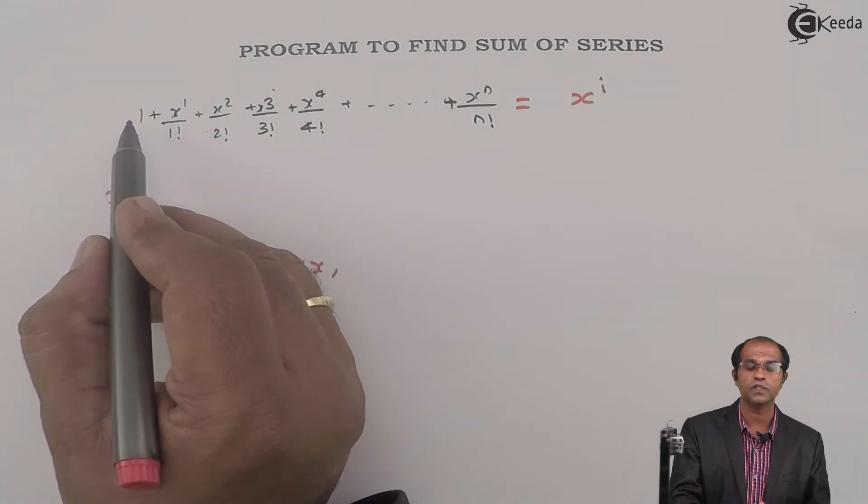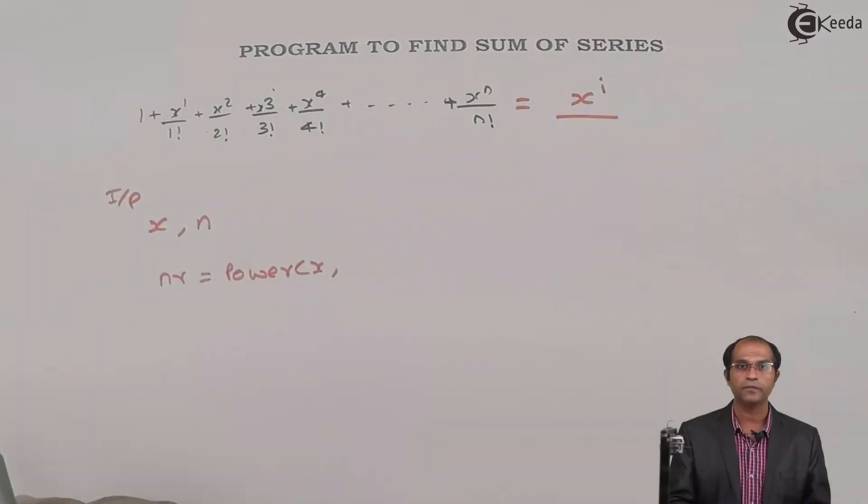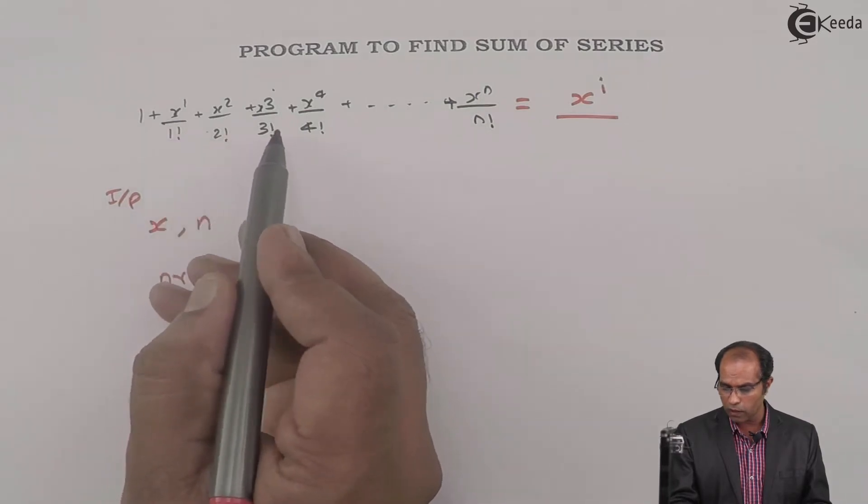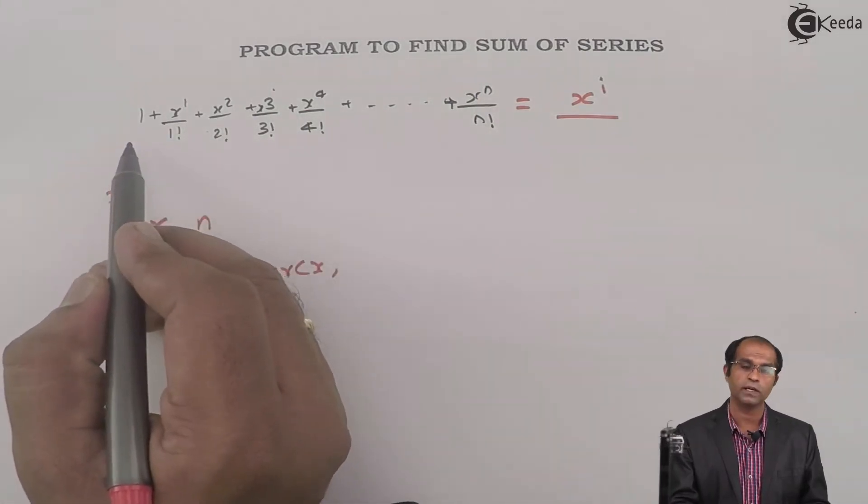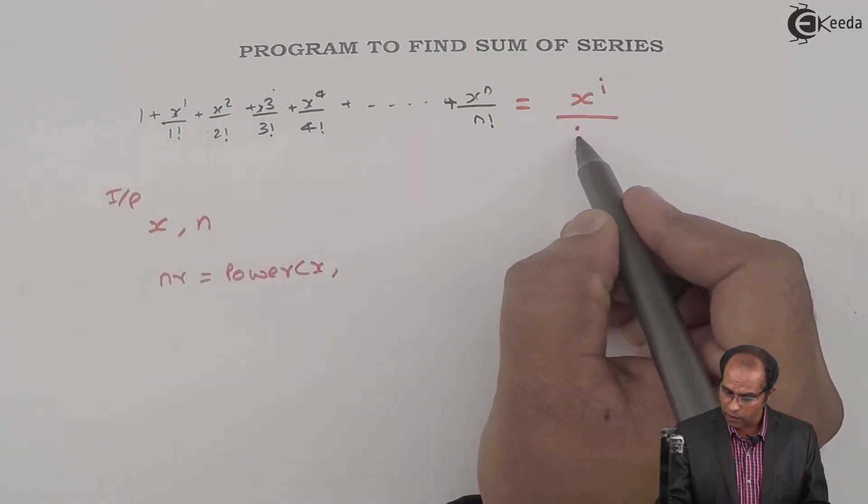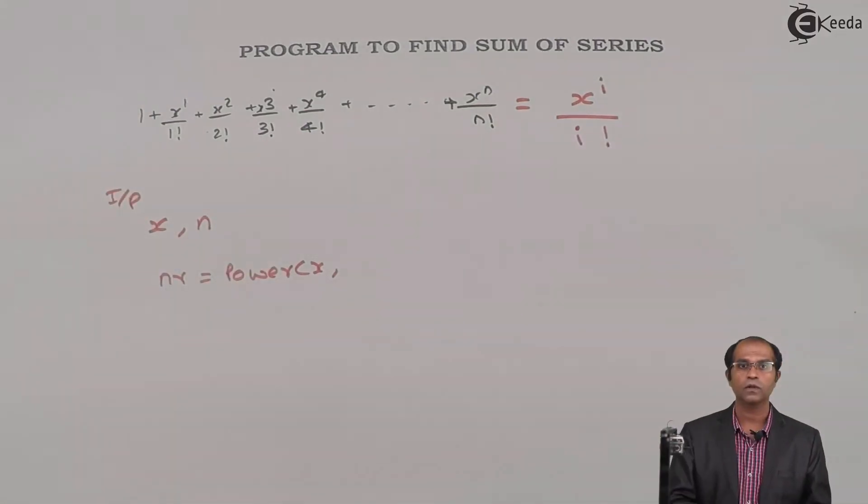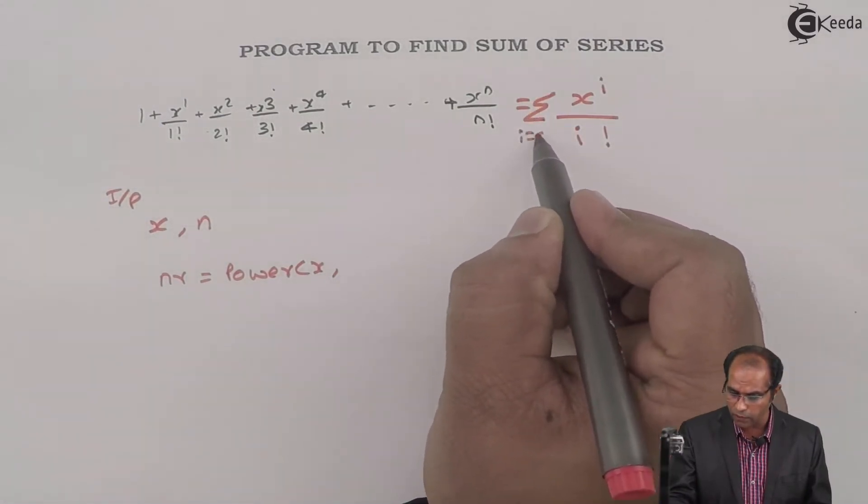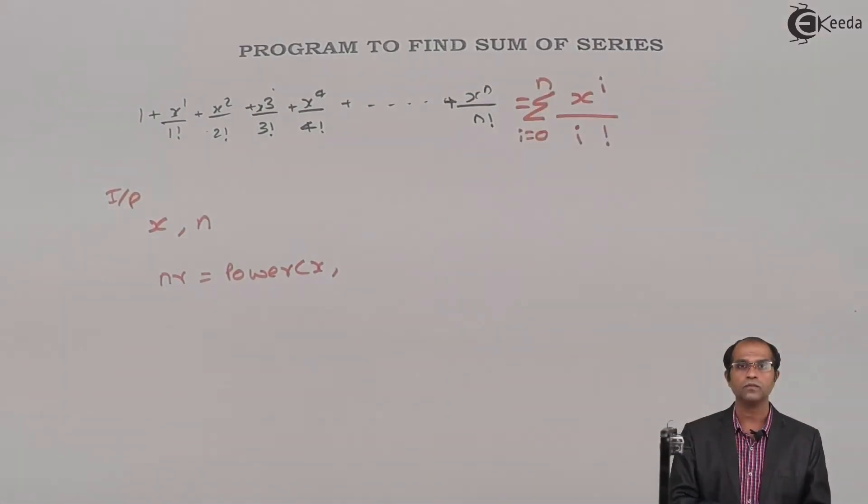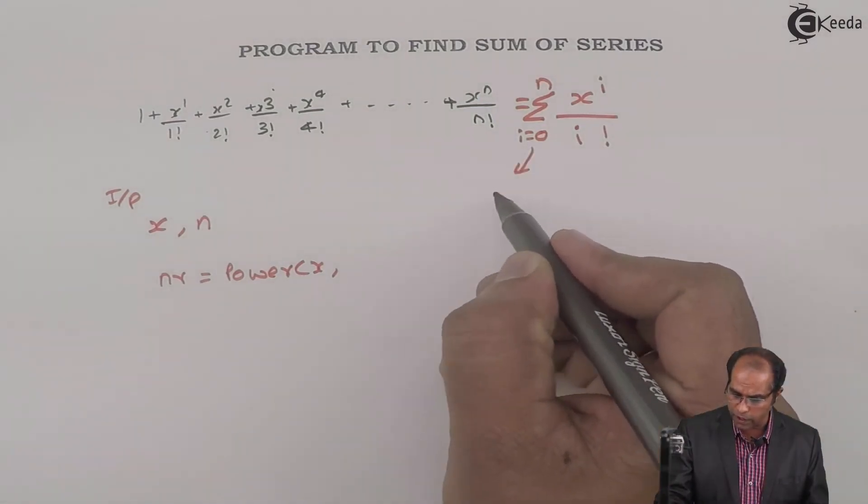The denominator has 0!, 1!, 2!, 3!, 4! till n!. So divided by, this 1 can also be written as 0!, can I say the factorial of i? And this is supposed to be added, so summation of i from 0 to n.